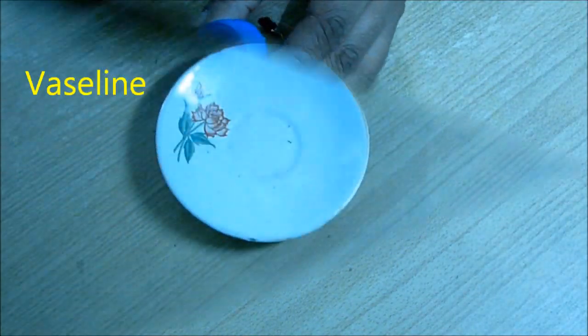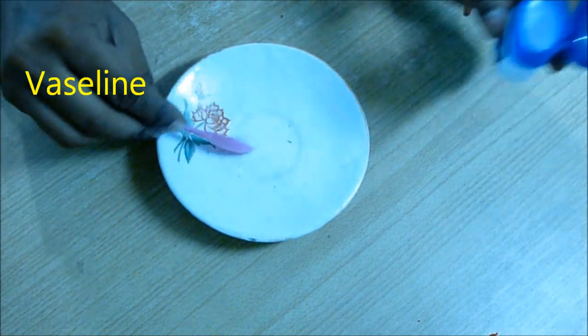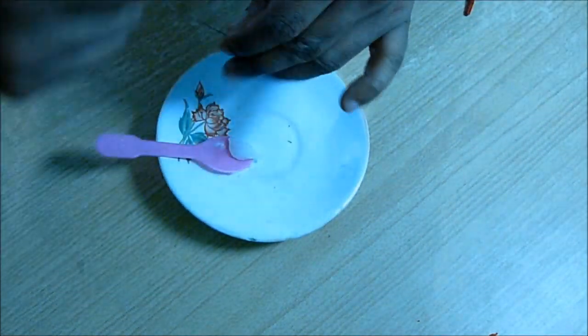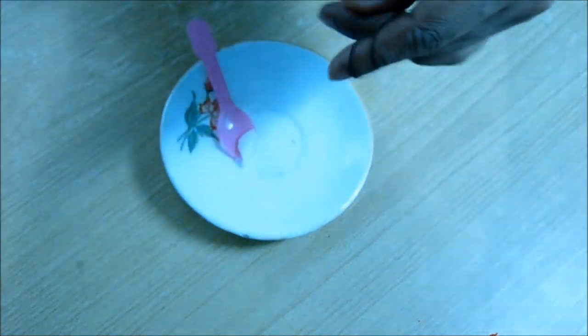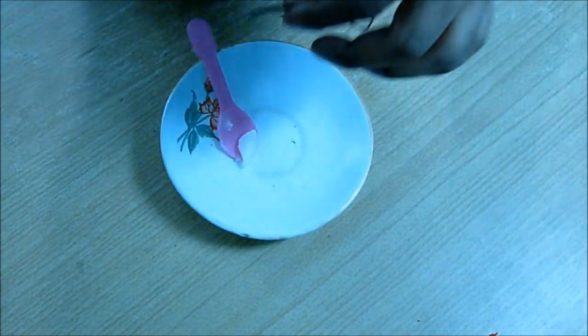Now you need to make a gel. For that you need Vaseline. Take some Vaseline and you need some cotton strings. Cut the cotton string into small pieces and mix with this.